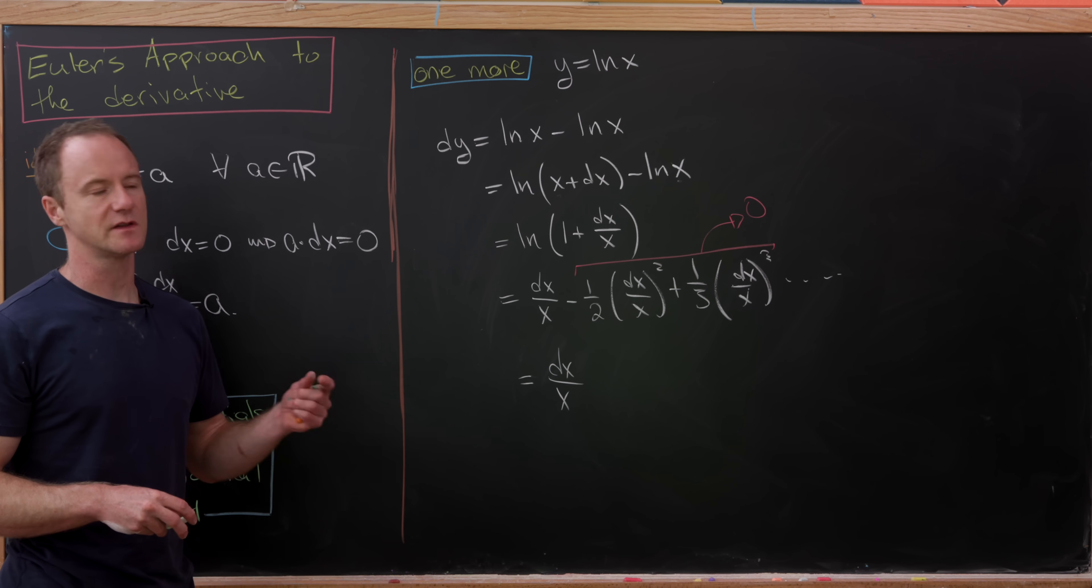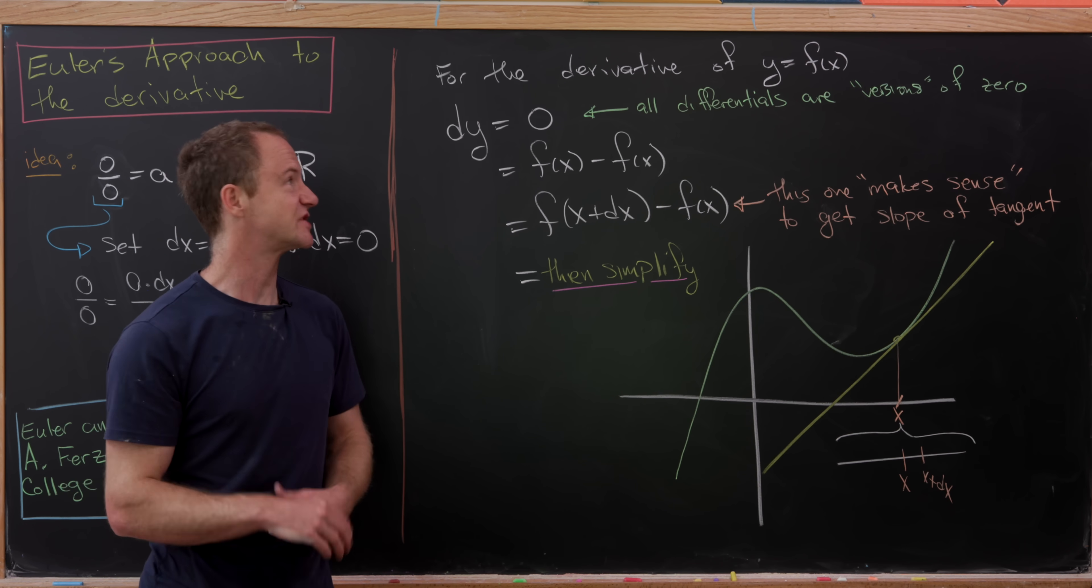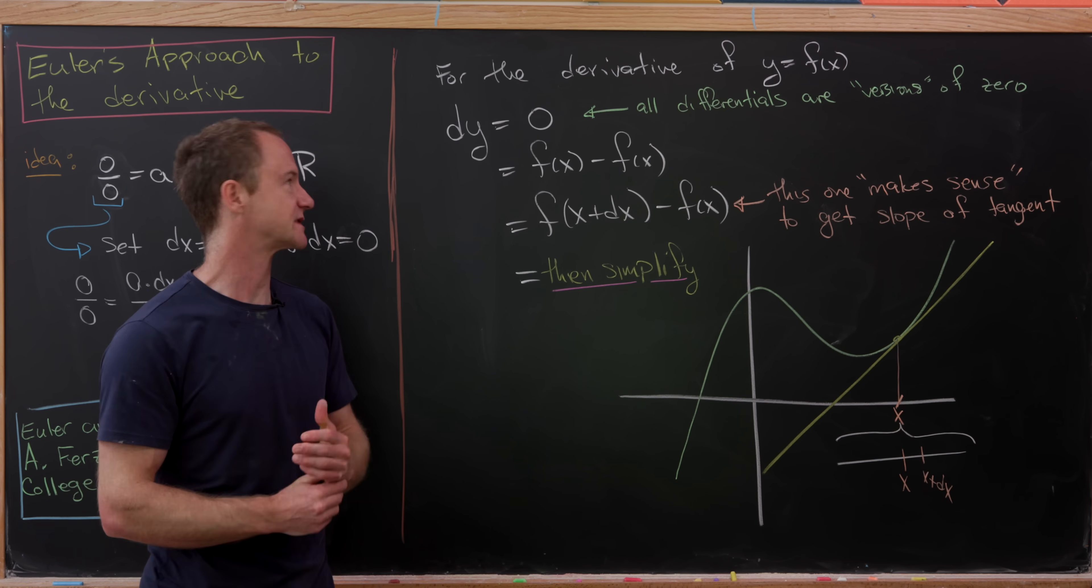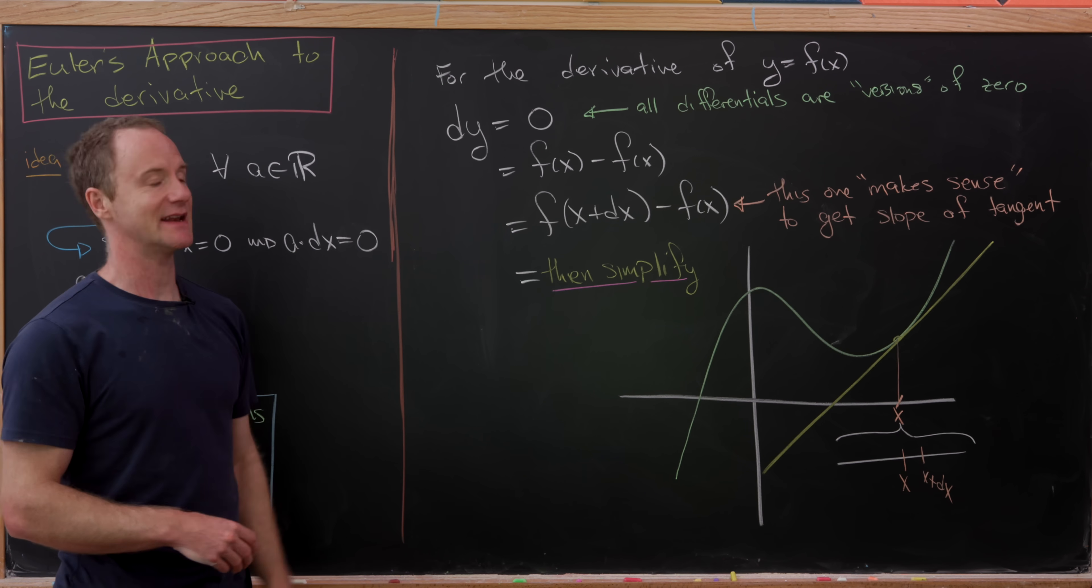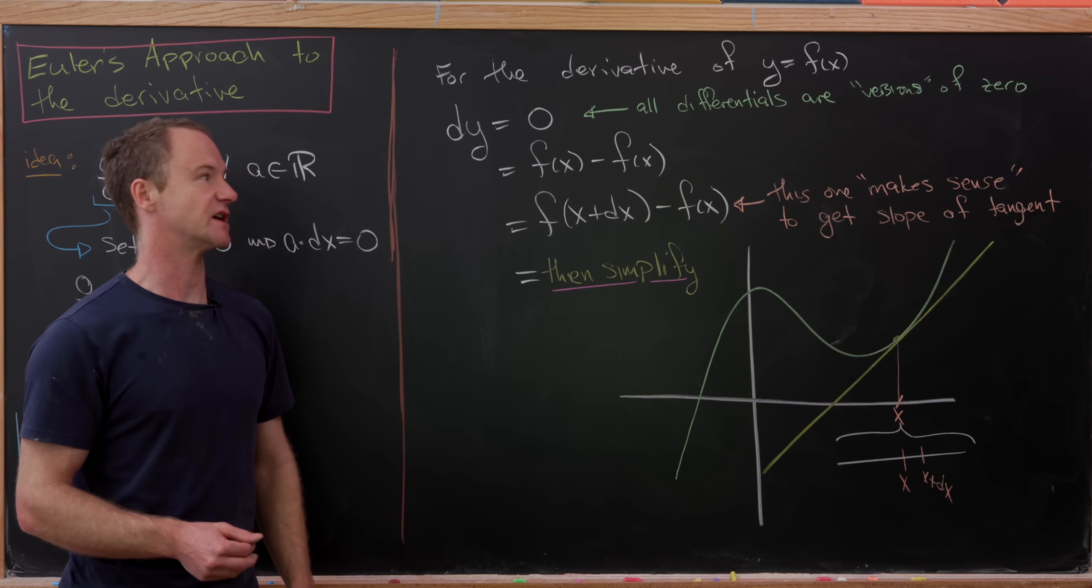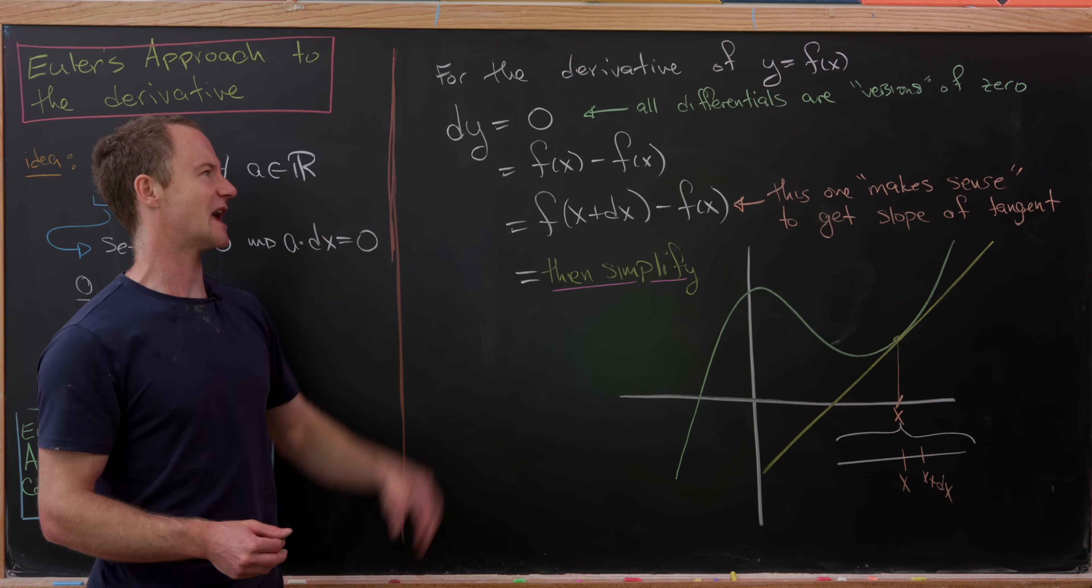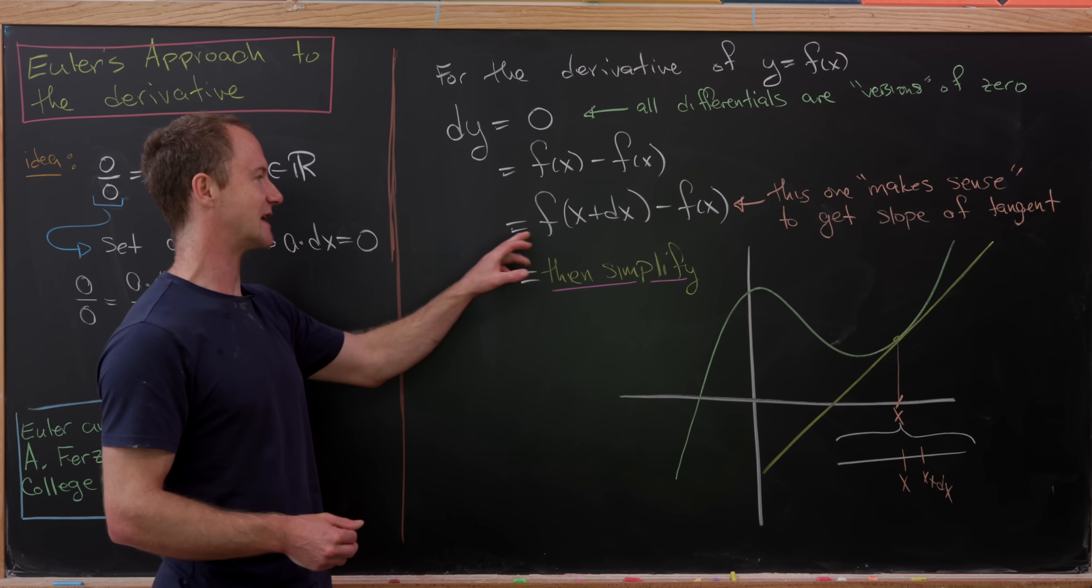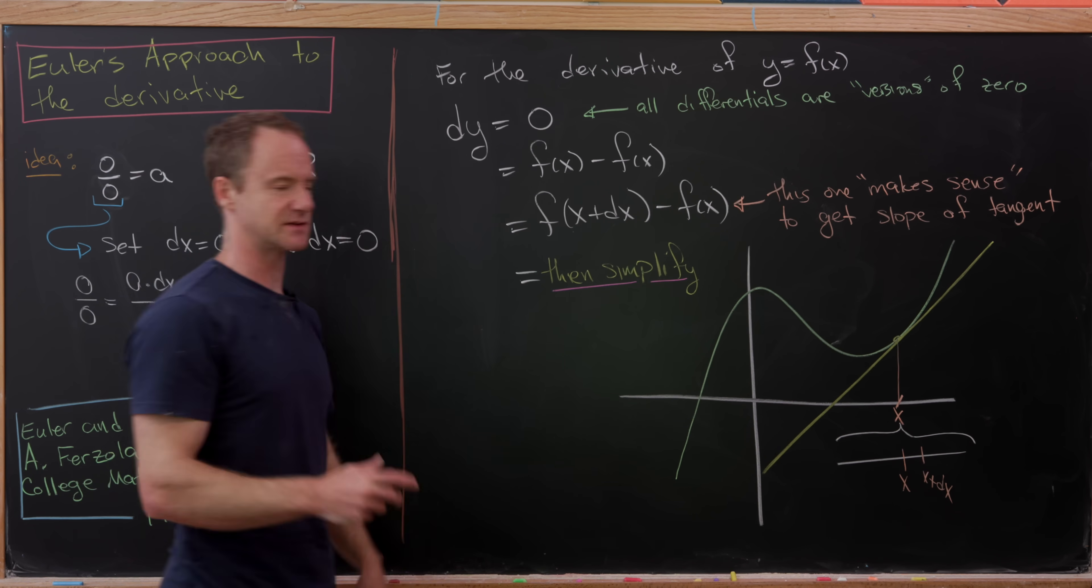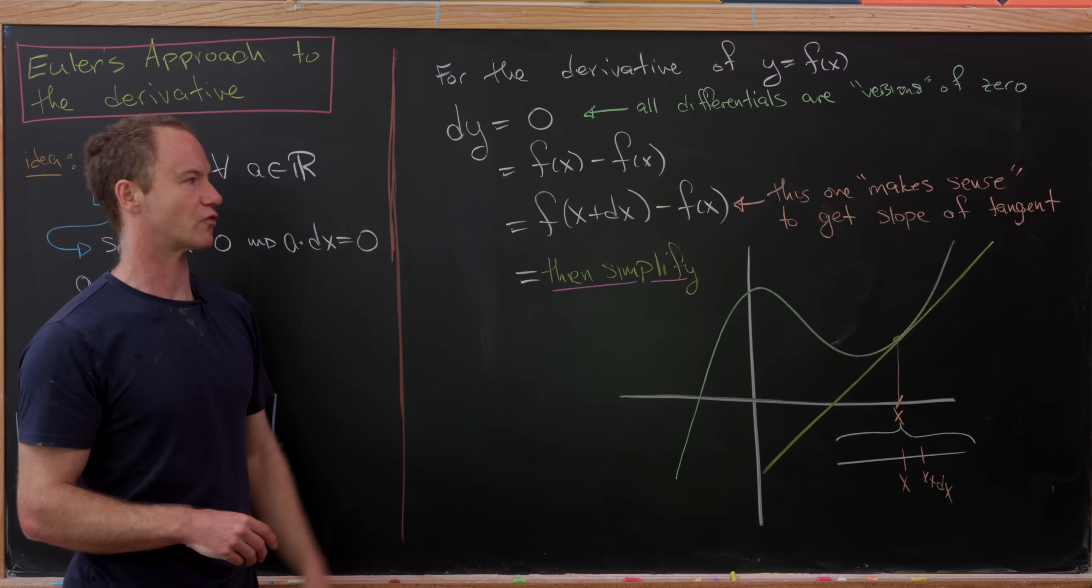Let's maybe end this video by doing a little bit of a discussion of why this is not quite as sketchy as it may seem. So let's see why this isn't quite as sketchy as it might seem. So let's say we want to find the derivative, or really the differential, of a function Y equals F of X. And so you'll start by writing down DY. That's our goal. But that's equal to zero because all differentials are versions of zero. So now how do we want to rewrite that version of zero? Well, we've been doing it as this F of X minus F of X and then rewriting that as F of X plus DX minus F of X. Of course, this X plus DX is simply X by our reasoning that all differentials are versions of zero. But why is this the right version of zero?